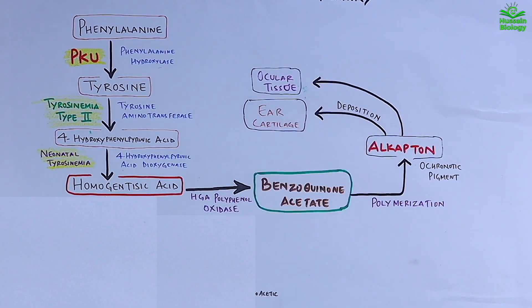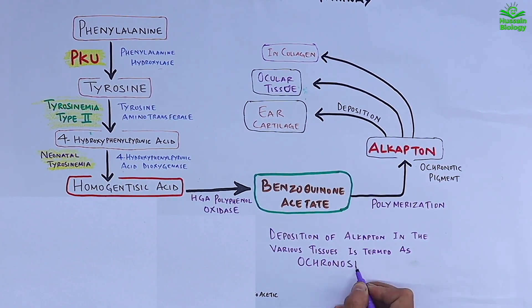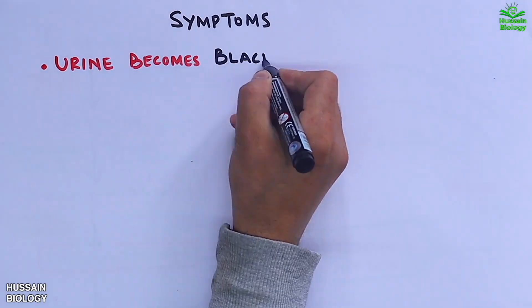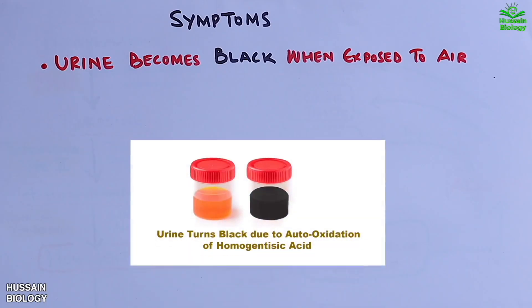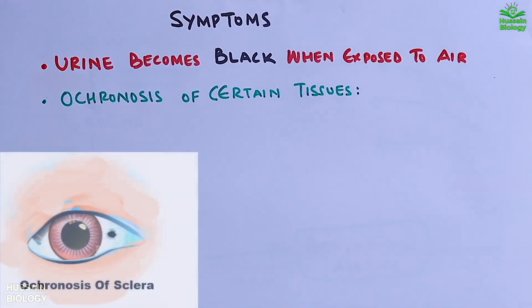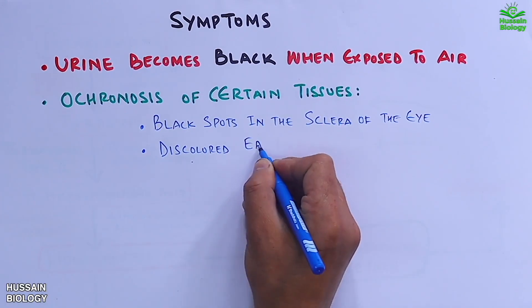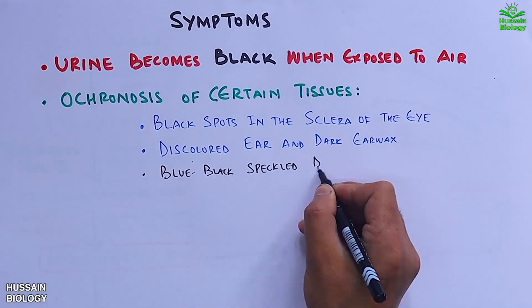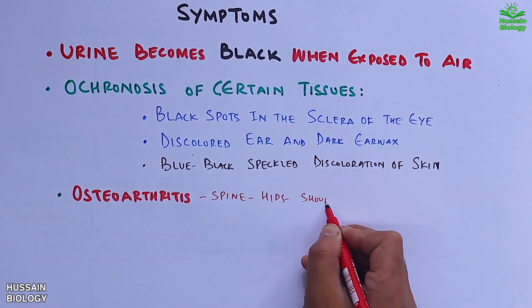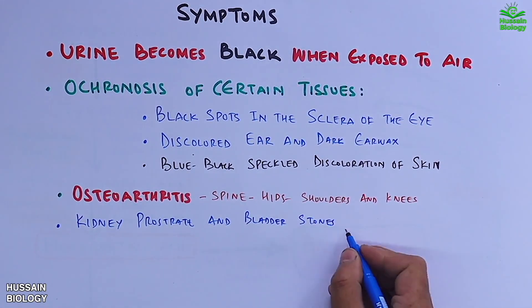The deposition of alkapton in various tissues is termed ochronosis. Symptoms include: urine that turns black when exposed to air, ochronosis of certain tissues such as black spots in the sclera of the eye, discolored ear and dark earwax, blue-black skin discoloration, osteoarthritis of the spine, hips, shoulders, and knees, and finally kidney, prostate, and bladder stones due to HGA accumulation.